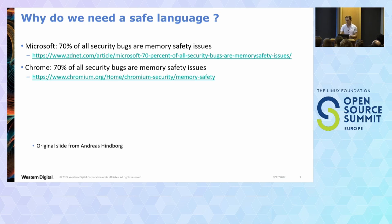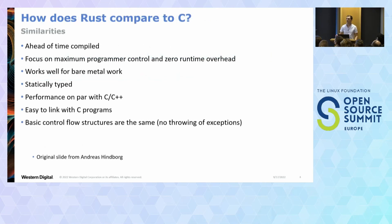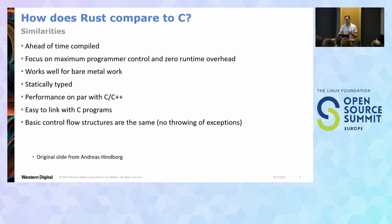Assuming everyone here knows C, I want to start with how Rust is similar to C. It's ahead-of-time compiled — you use LLVM in the Rust case to build assembly output. It focuses on maximum programmer control, full access to the hardware with no JVM or anything like that, and zero runtime overhead. It works well for bare metal, it's statically typed, has performance comparable to C, and it's easy to link with C programs. You can call C from Rust and Rust from C, so you don't have to rewrite everything in Rust overnight — you can replace bits incrementally.